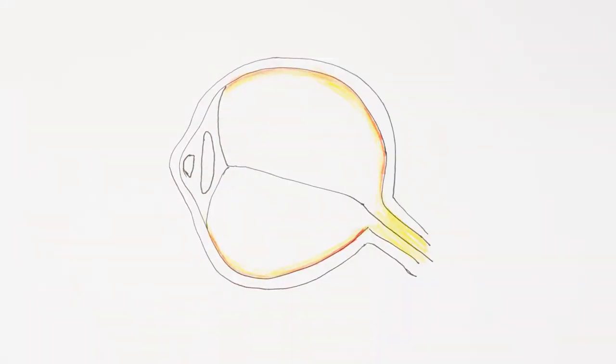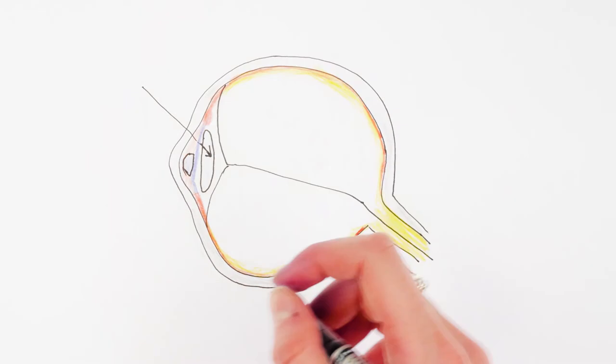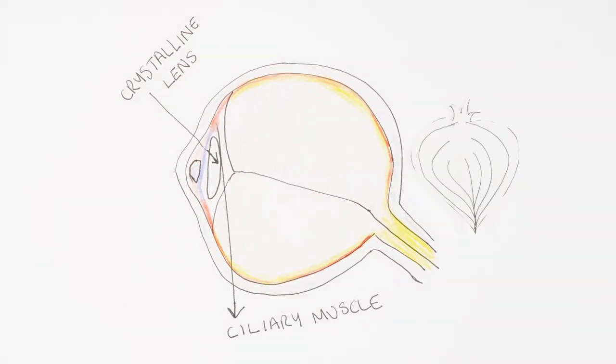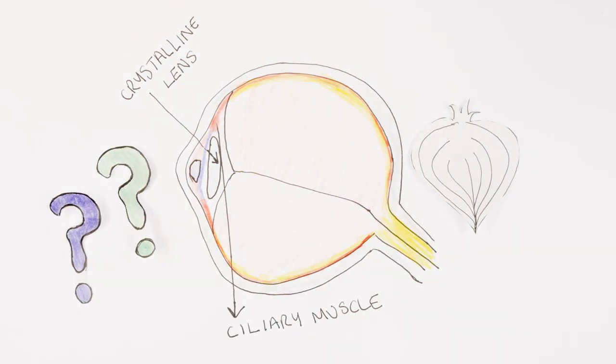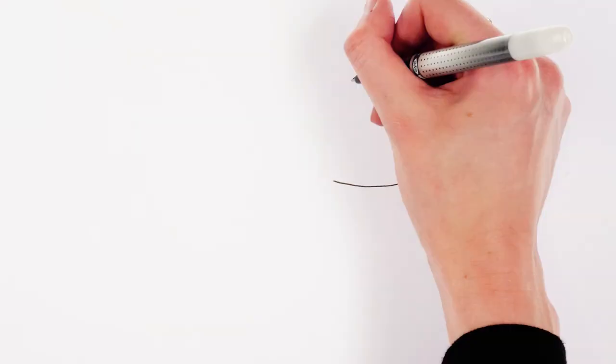Presbyopia is believed to be caused by a combination of several factors. Most important one being that our crystalline lens is like an onion and accumulates layers throughout life, increasing in thickness and therefore gets stiffer, making it difficult to change its shape. But how about the ciliary muscle?